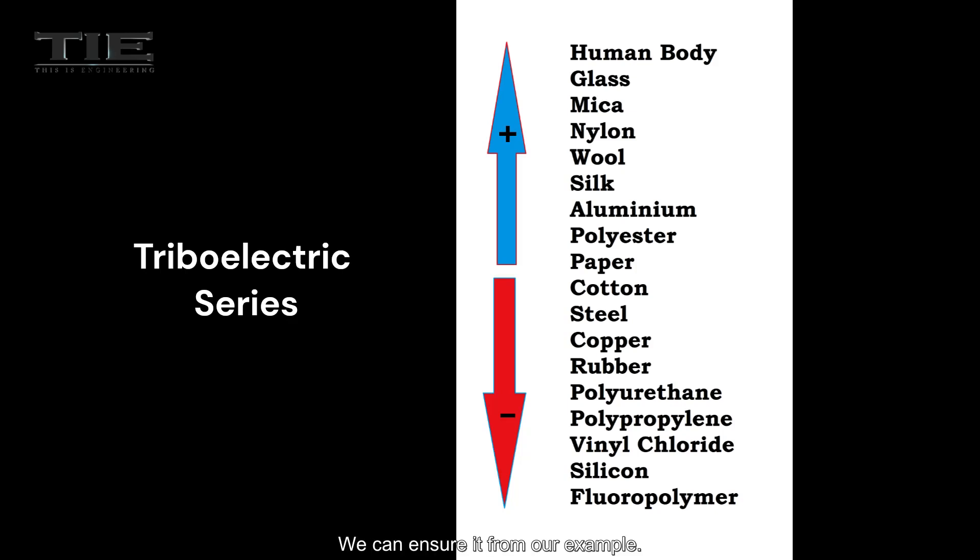We can ensure it from our example. Silk is near to the bottom of the series, so it becomes a negative charged object. As well as, the glass rod is near to the top of the series, so it becomes positive charge.